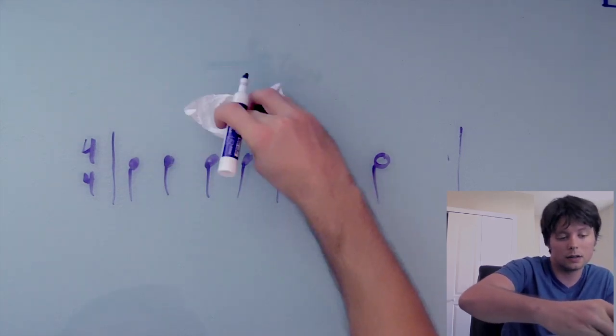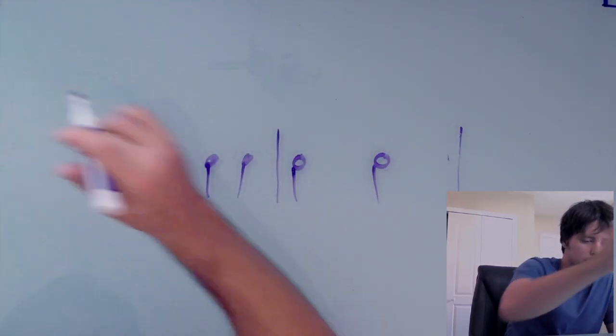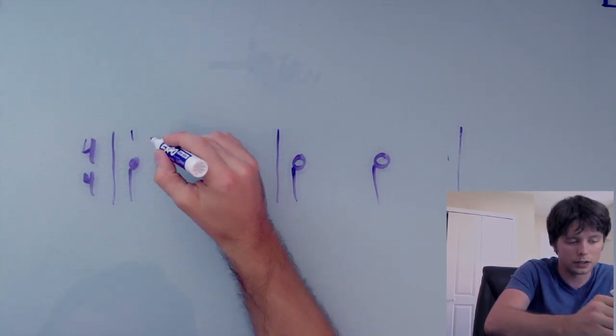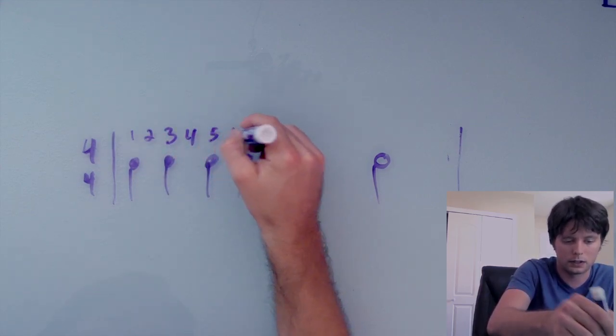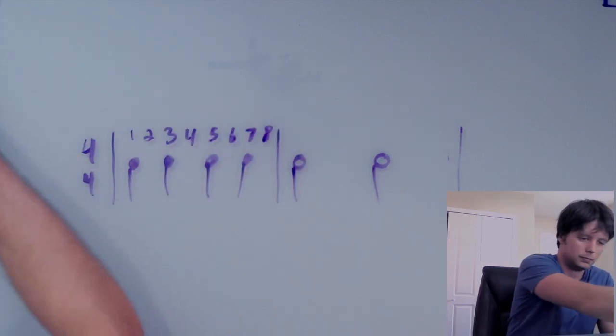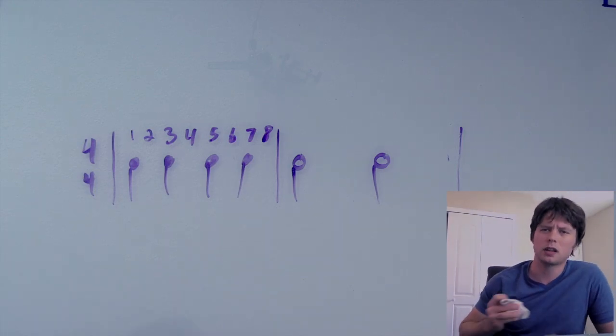Maybe there's eight beats in a measure. And each quarter note lasts for two beats. So one, two, three, four, five, six, seven, eight. And actually either one of those kind of makes sense.